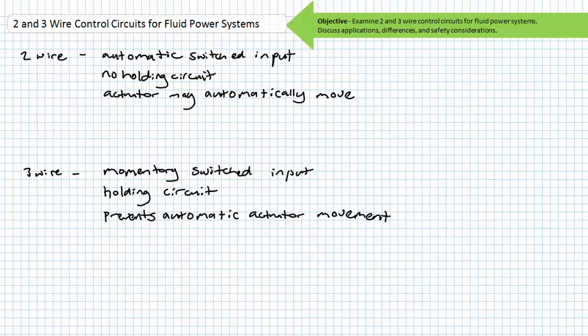Control circuits for electrically controlled fluid power systems are divided into two general categories: two wire and three wire control circuits. Two wire circuits are ordinarily characterized by automatic switches like temperature, float, or pressure switches, and are suitable for applications in which the automatic movement of a fluid power actuator would not present a safety hazard. Two wire circuits do not use a holding circuit. Three wire circuits, in contrast, are ordinarily characterized by momentary switches like push buttons and a holding circuit, and are suitable for applications where the unexpected movement of a fluid power actuator would present a safety hazard.